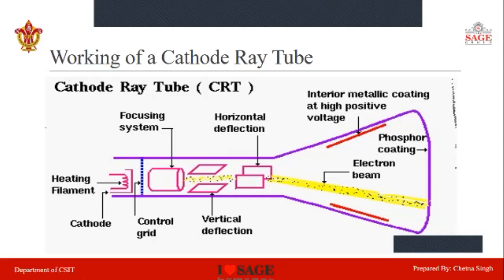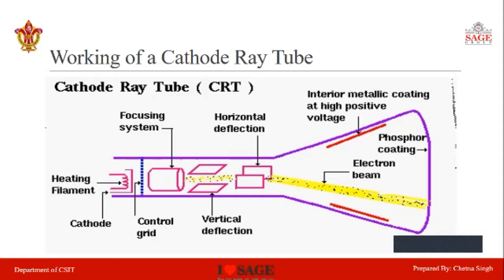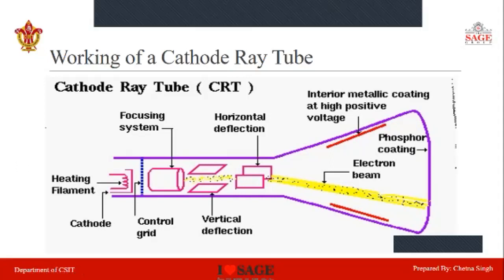After the heating of the cathode rod, the electron beam is controlled by the control grid and focusing system. The focusing system and horizontal and vertical deflection plates control the direction of electrons and the number of electrons in the electron beam. The interior metallic coating at high positive voltage also controls the projection of electrons onto the phosphor coating screen. The phosphor lights decay after a few milliseconds, so we have to refresh the phosphor and continuously heat the cathode to maintain a constant projection on the phosphor screen.